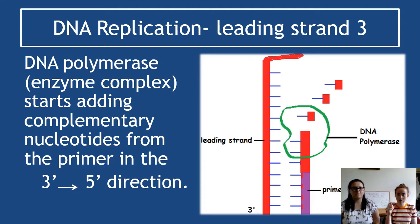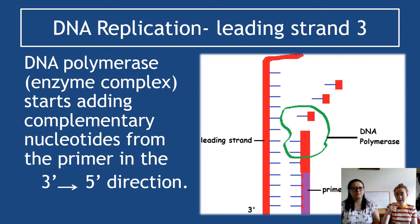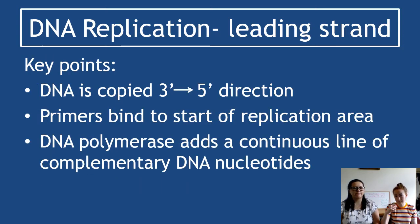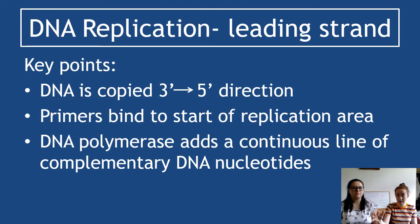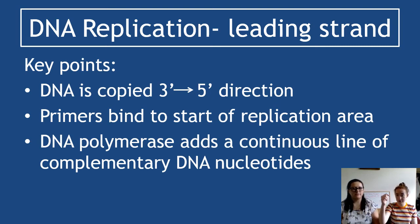DNA polymerase, which is an enzyme complex, then goes along and adds complementary free nucleotides one at a time. It starts from the primer, adding the first free nucleotide, then another, and so on, continuing in the direction of 3' to 5'. The main thing you need to know — and what students most often get wrong — is that this is always 3' to 5', going from the small number to the large. The primer binds at the start point, and DNA polymerase adds free nucleotides until replication is complete.